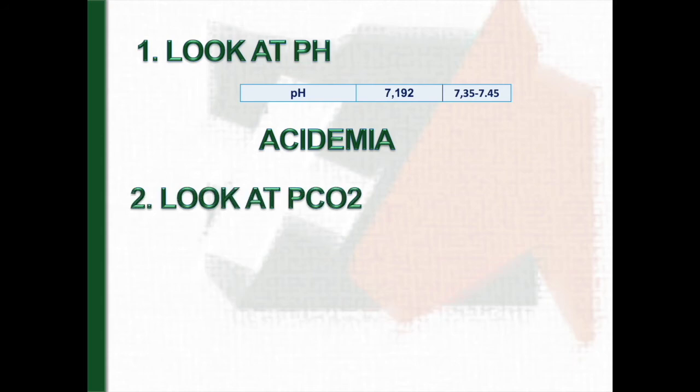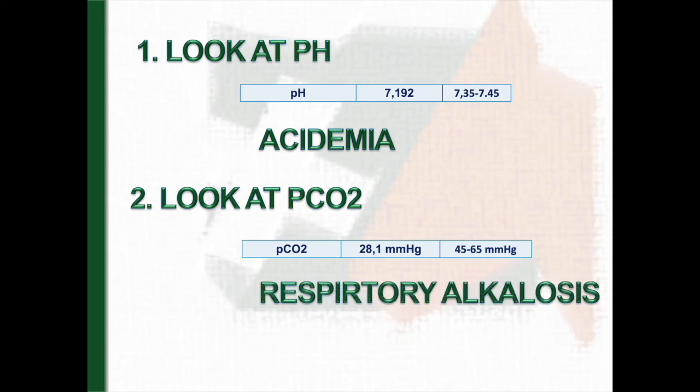The second step is check the pCO2. In this case, pH was 28, also well below its expected value. Therefore, with respect to respiratory component, the horse present respiratory alkalosis.